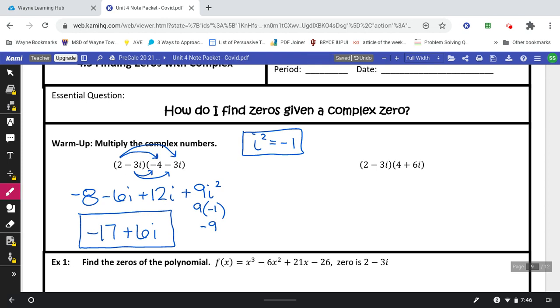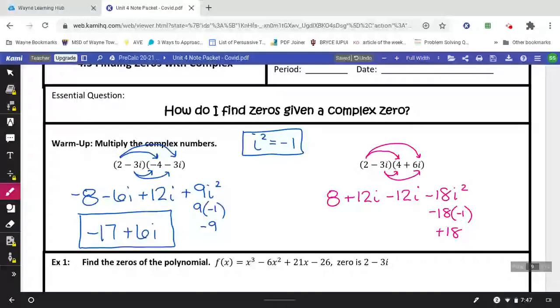Take a moment to see if you can do the next one. Foiling should have looked like this. Your i squared turns to negative 1, which gives you negative 18 times negative 1, which gives you a positive 18. Combine your real numbers, 8 and 18, to make 26. And when you combine your imaginary numbers, 12i and negative 12i, those are actually going to cancel out. So you're left with just an answer of 26.